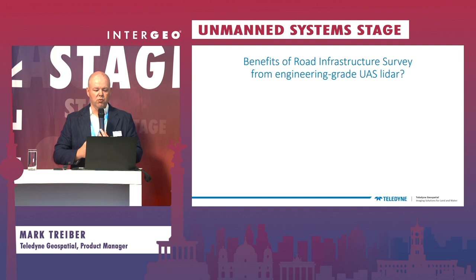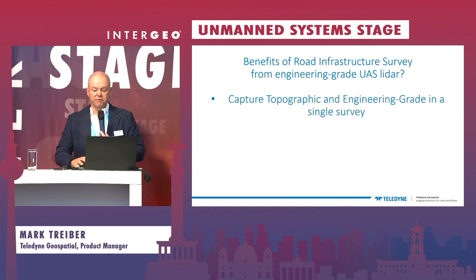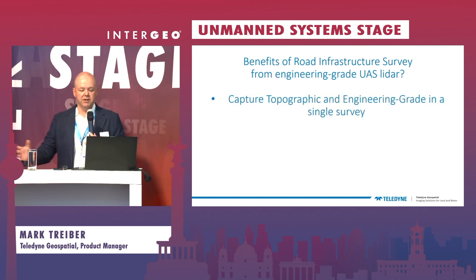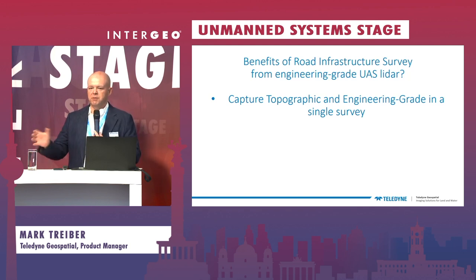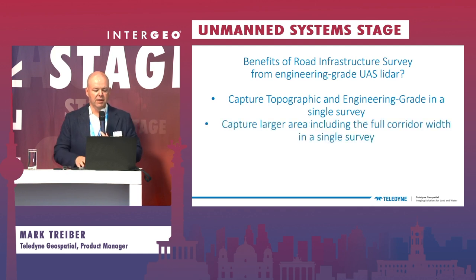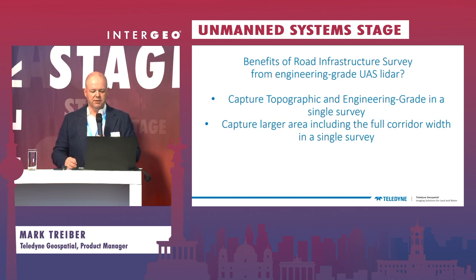When you look at the benefits of doing road infrastructure surveys from an engineering-grade system, there are really two I like to focus on. The first is that we can capture both the topographic data and the engineering-grade data in a single survey, improving efficiency with less time in the area and less chance of error or having to manipulate different data sets together. And you can capture that large area including the full corridor width — for some projects that can be a couple hundred meters on either side — all within a single engineering survey, giving significant productivity improvements.